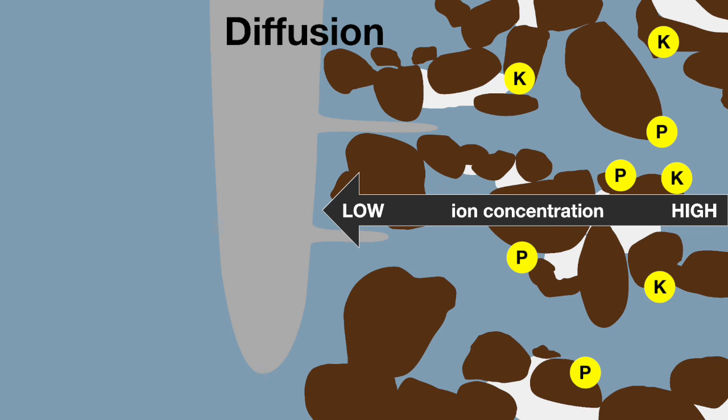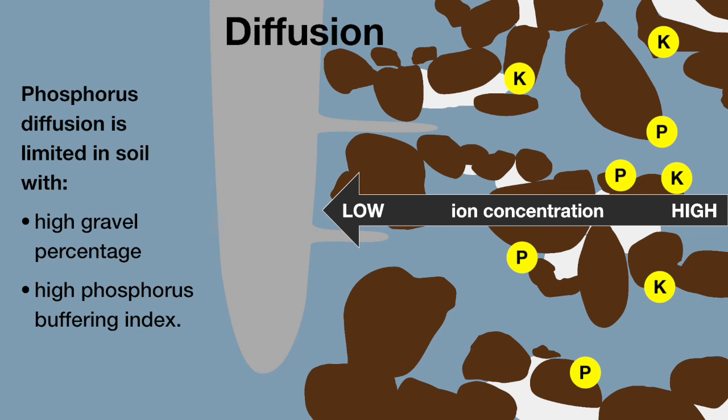Soil characteristics, such as mineralogy, can severely limit diffusion of phosphorus, for instance in high gravel soils and high phosphorus buffering index soils.